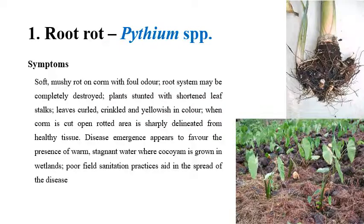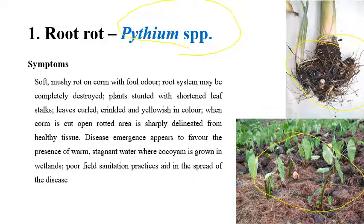The first disease is root rot, which is caused by Pythium species. The name itself indicates rotting of roots, which can be clearly seen. In the field, the height of the plant can be reduced — this is called stunting of the plant. The leaves are also distorted, and compared to a healthy plant, the leaf area is shortened.